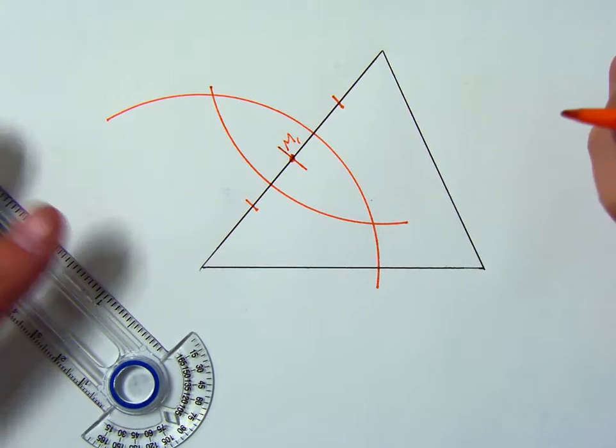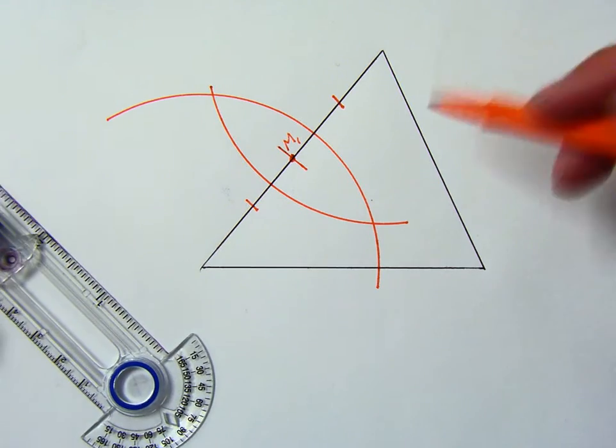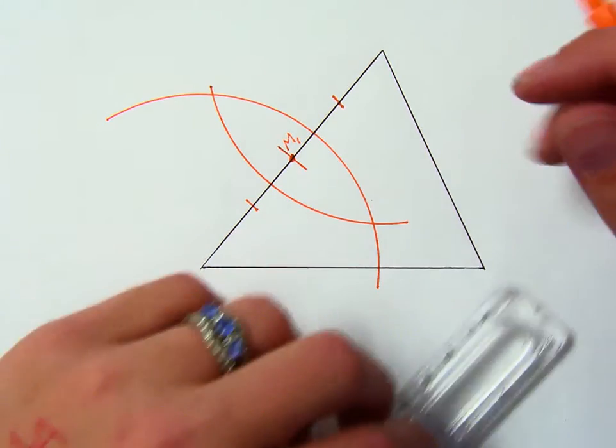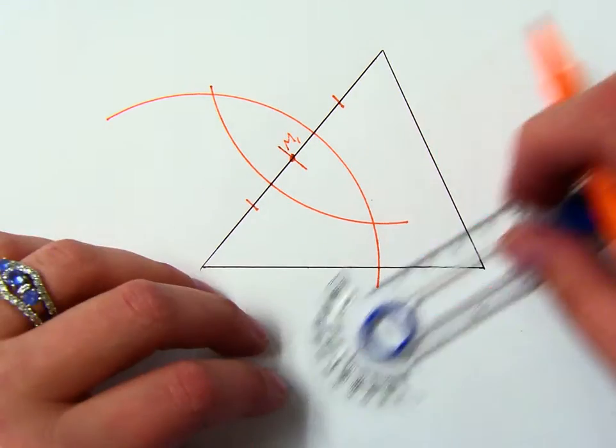Mark either side of M1 congruent. And now we're going to turn and do the other side that we're trying to make the mid-segment connect to.